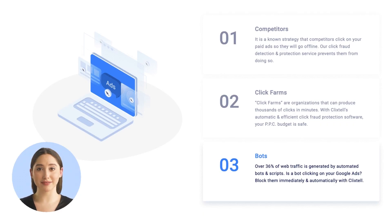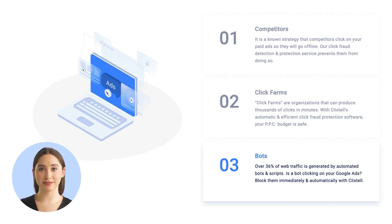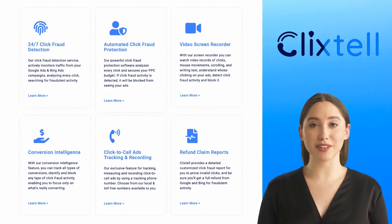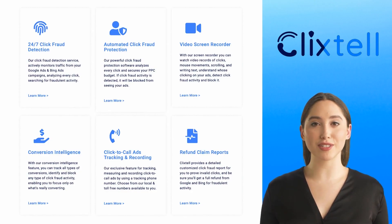Who's clicking my ads? Competitors: it's a known strategy that competitors click on your paid ads so they will go offline. Click farms are organizations that can produce thousands of clicks in minutes. Bots: over 36% of web traffic is generated by automatic bots and scripts.